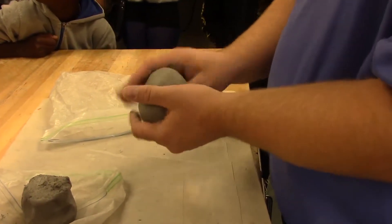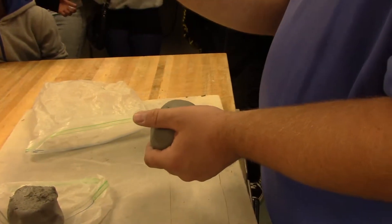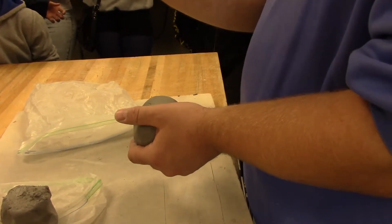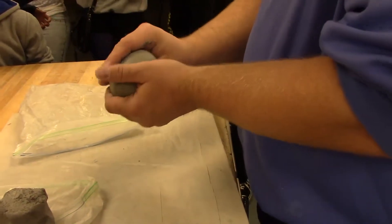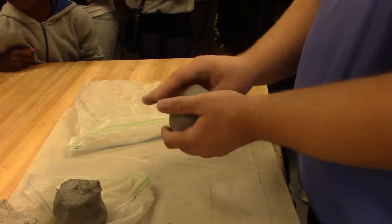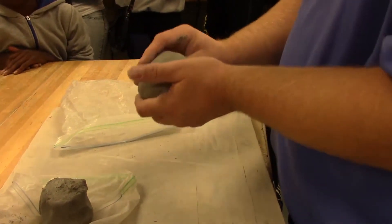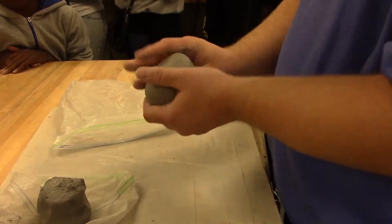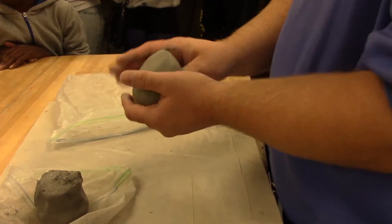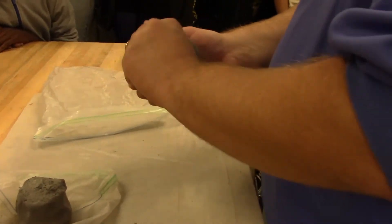Now what you want when this is all done is you want a pot that's about a quarter of an inch thick to about a half inch thick all the way around. And if you press it too hard in any one spot, it gets warped and deformed. We want a nice even pot if possible or cup. You're basically going to wind up with like a cup.